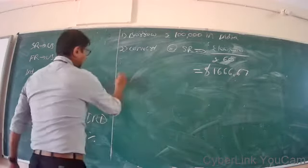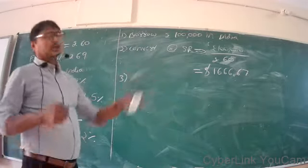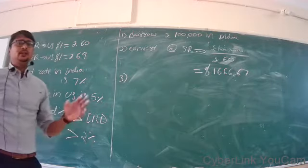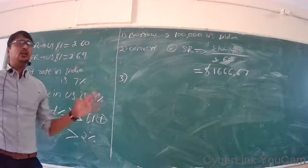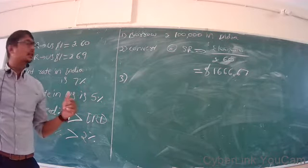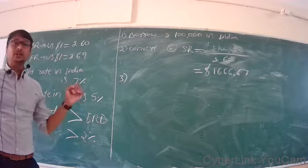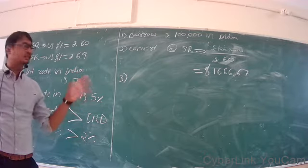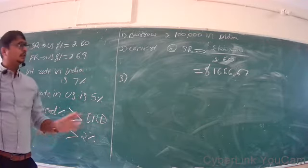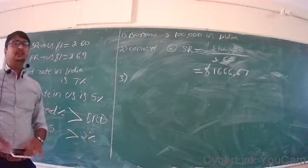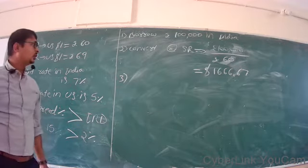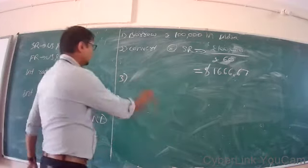We convert rupees to dollars because to deposit in a US bank you must have dollars — US banks never accept Indian rupee-denominated currency. So you convert Rs. 1 lakh into dollars at the spot rate of Rs. 60 per dollar, giving 1,666.67 US dollars. Now you are going to deposit this amount in the US bank.